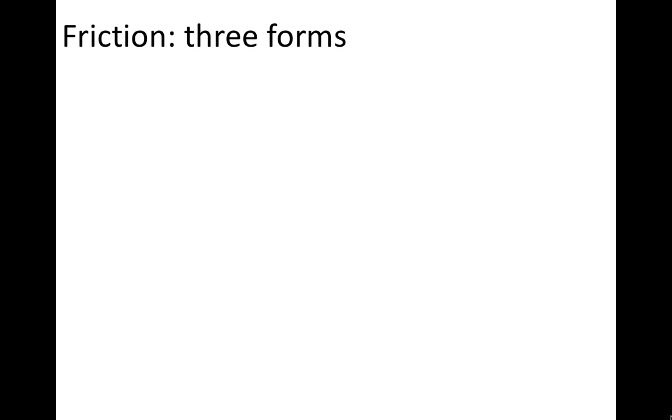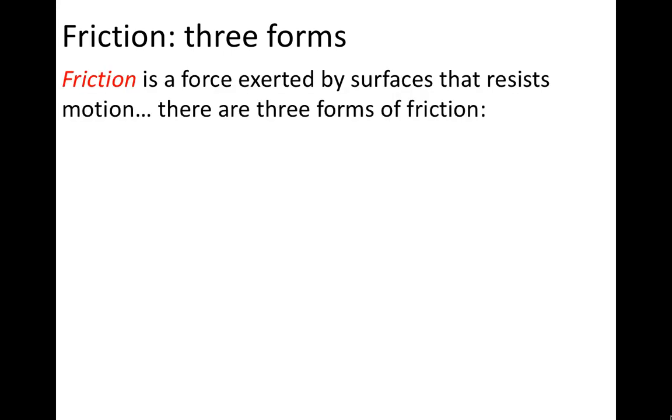There are three forms of friction. Friction is a force that is exerted by surfaces on objects that resists the motion of objects along the surface. And there's three forms of friction.